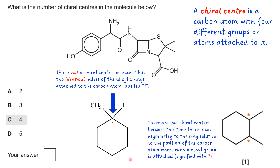However, this one on the right actually is a chiral center. You can see that there are four different groups if you include the hydrogen that's implied by the skeletal formula — don't forget hydrogens also count. The same applies to the carbon below: the red shaded part is different to the purple shaded part because of the presence of this methyl group.